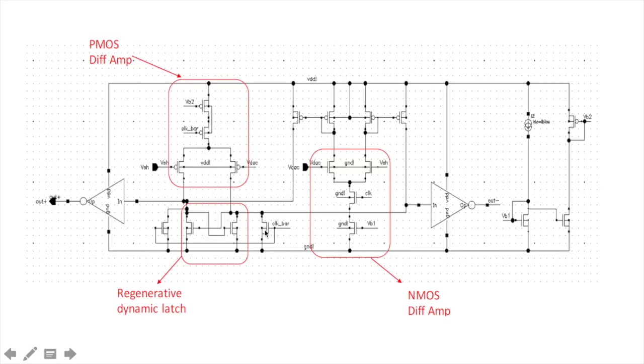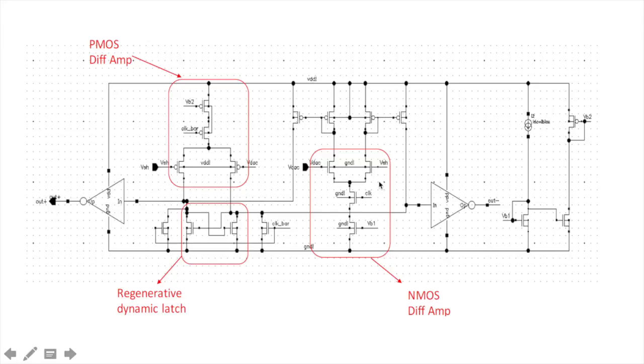Here we have two reset switches which reset both the outputs to ground in the reset phase. And as soon as the clock goes high in the sampling phase, we are able to perform the comparison of the inputs. Now, we will explain the SAR logic.